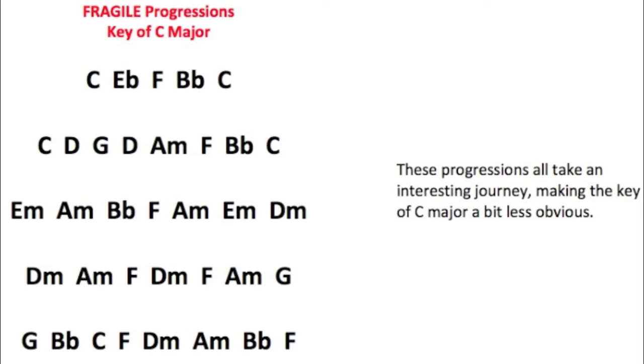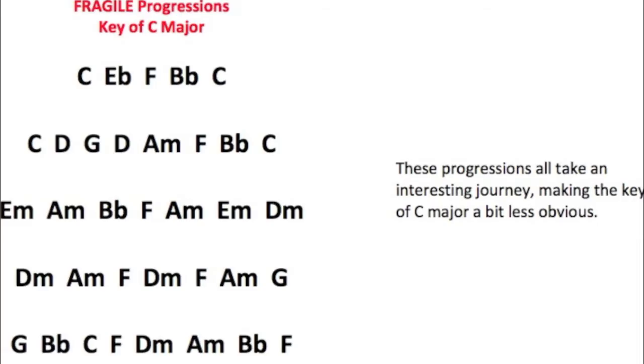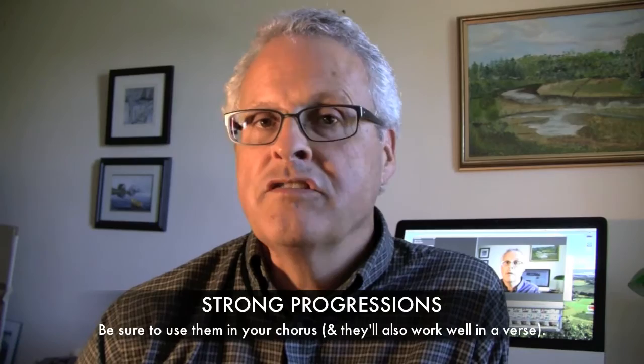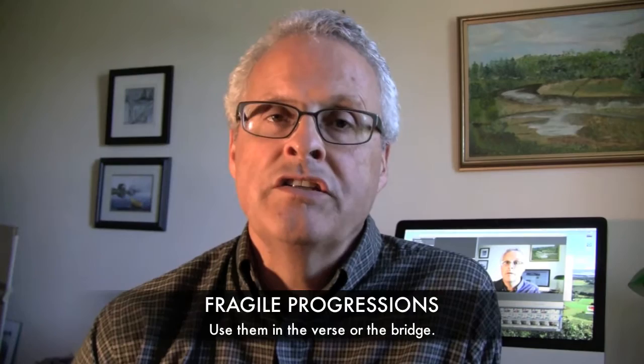For that reason, fragile progressions work nicely with the verse, because typically a song's verse will describe things and tell you a story. So the guidelines here are very simple: you'll want to use strong progressions in your chorus, because they work really nicely with a song's hook. And you'll want to use more fragile progressions in a verse or in a bridge, because they partner really well with a story-type lyric.